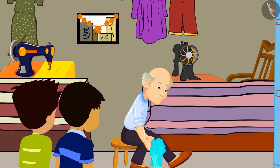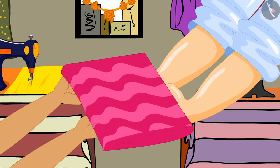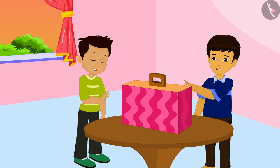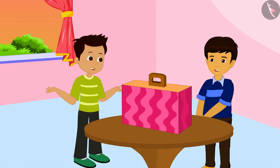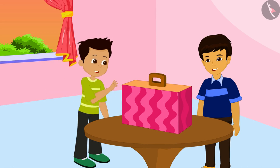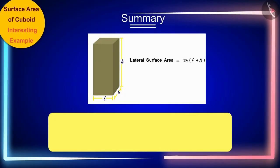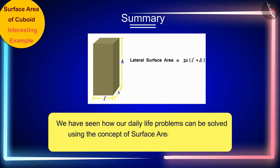The two friends bought four square feet of cloth from the tailor and got a beautiful cover stitched for Manas's suitcase. With this example we have seen how our daily life problems can be solved using the concept of surface area of the cuboid. In the next video we will see some more fun examples related to this.